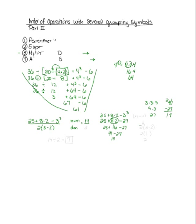We still have to do the denominator, which is two parentheses three minus two. There is no operator symbol separating the two from the parentheses, which means it implies multiplication, so we must keep the parentheses. Starting with the parentheses: three minus two gives one. Since there's no operator separating the two from the parentheses, it's multiplication — two times one is two. That's our denominator. With numerator fourteen and denominator two, this is rewritten as fourteen divided by two, which gives seven. So the answer to that entire order of operations problem is seven.